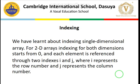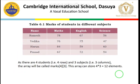Indexing: in a one-dimensional array, the first element has index value 0. For two-dimensional arrays, indexing for both dimensions starts from 0, where i refers to the row and j refers to the column position. For example, to access the marks of Prasad in English, they are in the fourth row and second column, so we need to use their respective index values to access that element.